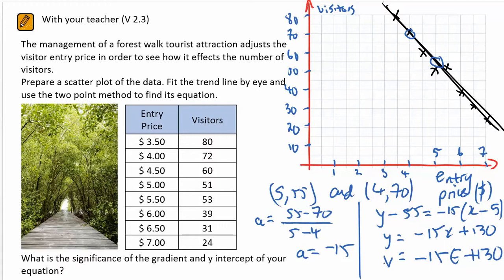And that comes down to: visitor numbers equals negative 15 times the entry price plus 130. The gradient in this case is minus 15 — that indicates for each dollar increase, I get 15 fewer visitors. The y-intercept of 130 would indicate that when there's no price, or entrance is free, I'll have 130 visitors.